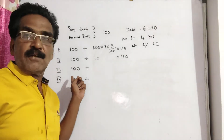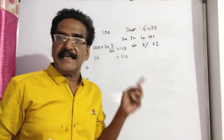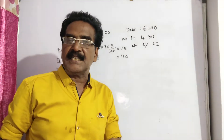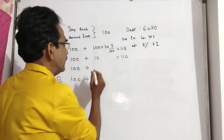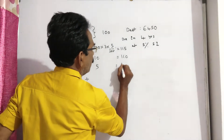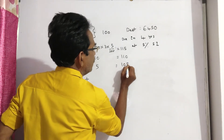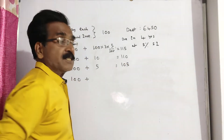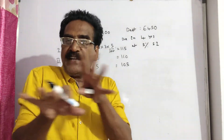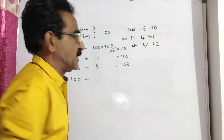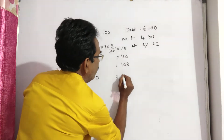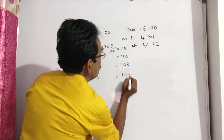The installment paid at the end of the third year will fetch interest only for 1 year, giving Rs. 5 — so that is Rs. 105. And the installment paid at the end of the fourth year will fetch no interest, as the period is over, so it remains Rs. 100.